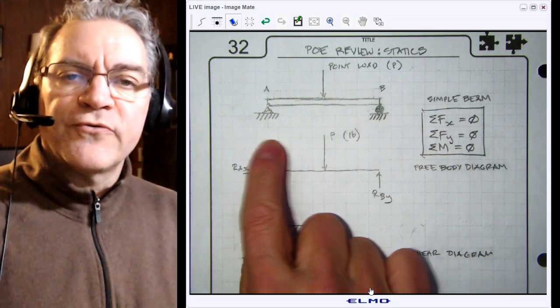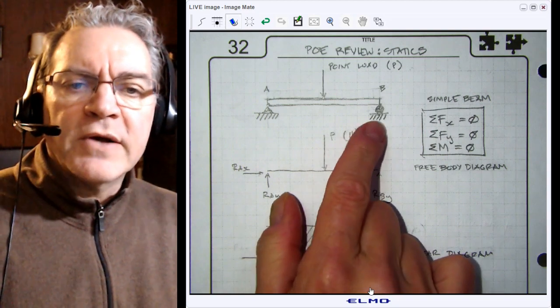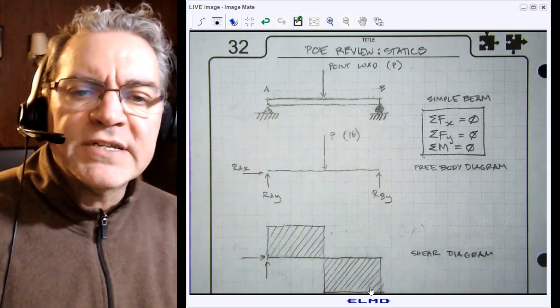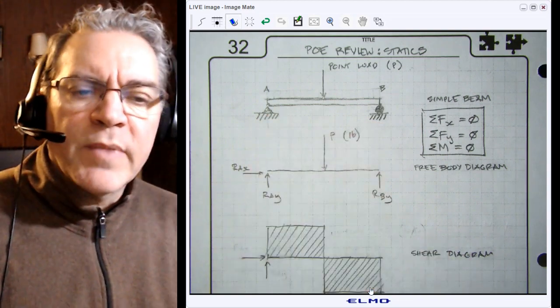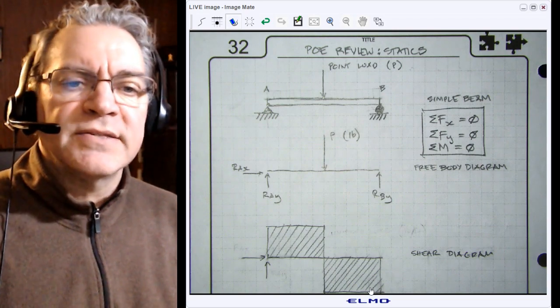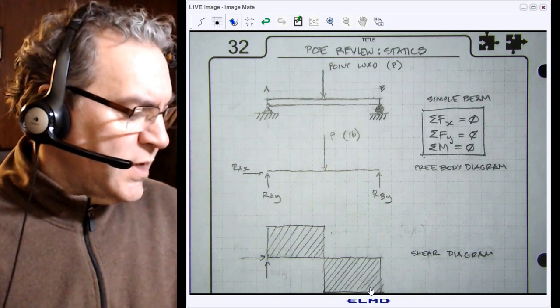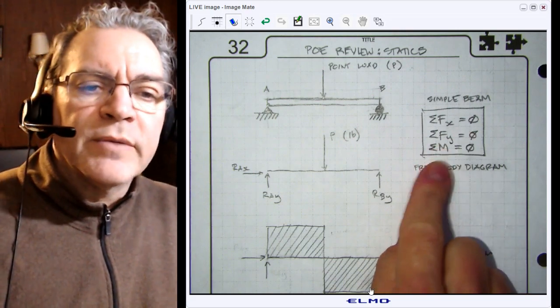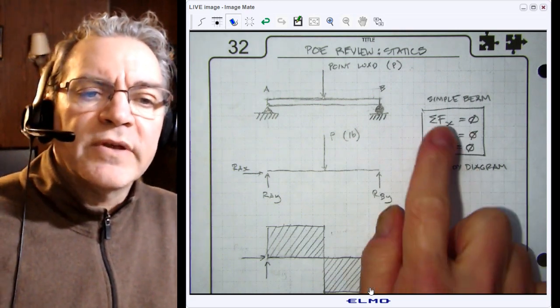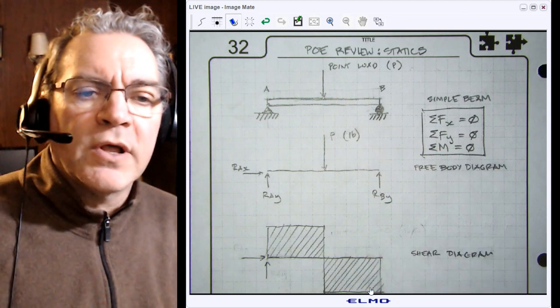So as a refresher, we're talking about simple beams that are statically determinate. Remember, statically determinate means we can analyze them using the method of moments and our static equilibrium formulas. The sum of the forces and the sum of the moments all have to equal zero.